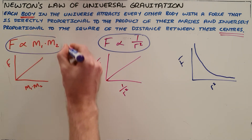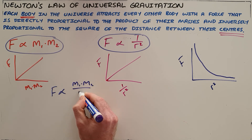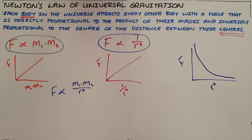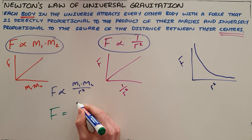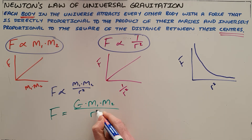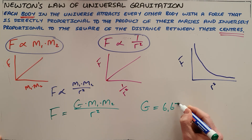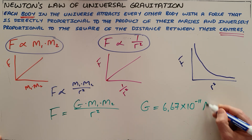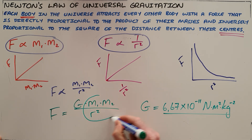These two graphs are very important — this one is referred to as the inverse square law. Combining these two relationships, we find that the force is directly proportional to the product of the masses divided by the distance between their centers squared. To make this into an equation, we introduce the universal gravitational constant G, so that F = G × m₁ × m₂ / r², where G is 6.67 × 10⁻¹¹ N·m²/kg², a constant throughout the entire universe. The three factors we have control over are the masses and the distance between the objects.